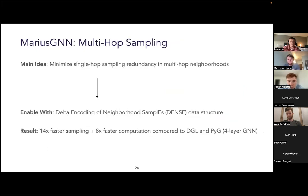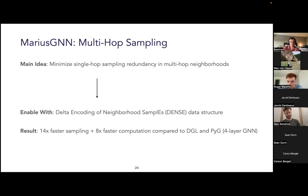This led to a key idea in Marius GNN: minimize single-hop sampling redundancy while constructing multi-hop neighborhoods by caching and reusing previous samples in each mini-batch. To do this, we needed a way to track which nodes needed sampling at each step and an efficient way to construct, store, and process multi-hop neighborhoods. To that end, we introduced the Delta Encoding of Neighborhood Samples data structure — DENS for short — which tracks multi-hop neighborhoods using incremental deltas between each successive sampling hop. Together with parallel algorithms for constructing DENS on the CPU and using it on the GPU, this led to about 14x faster sampling and 8x faster computation compared to DGL and PyTorch Geometric.